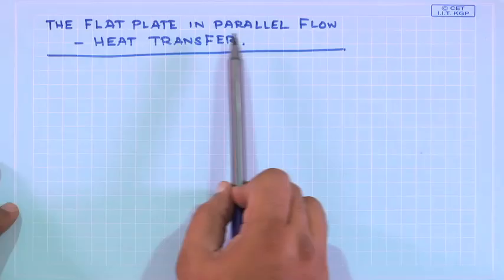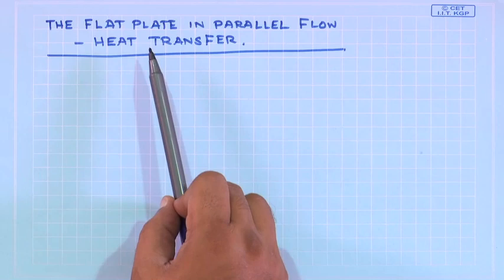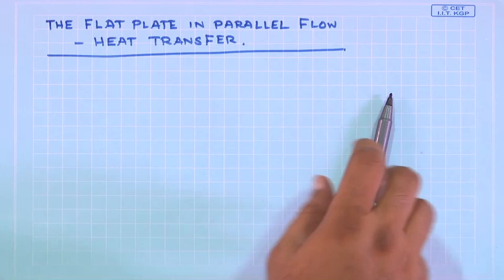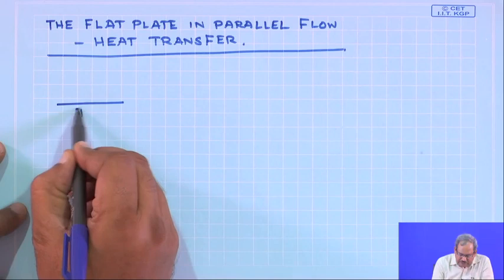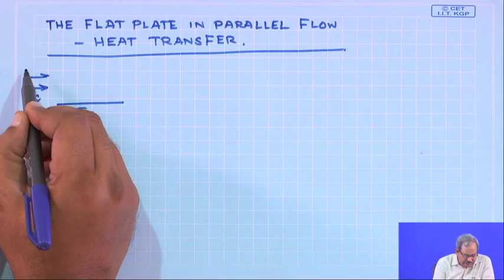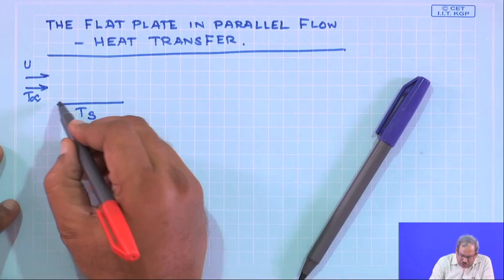What we would now like to do is use this knowledge to analyze flow over a flat plate in the heat transfer case. When there is a difference in temperature between the plate and the approaching fluid, the plate is at temperature T_s and the fluid approaches at temperature T∞ with velocity u∞, and there will be growth of the thermal boundary layer.